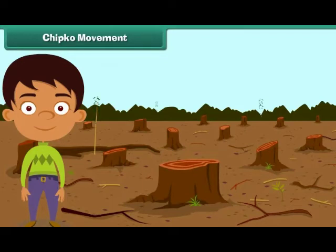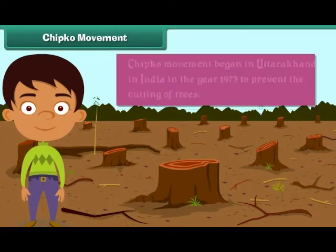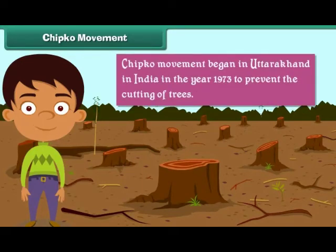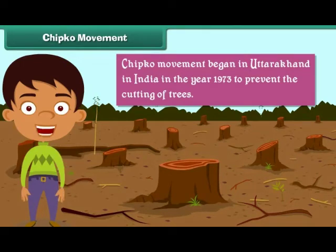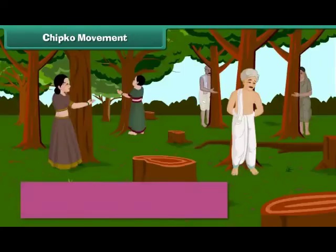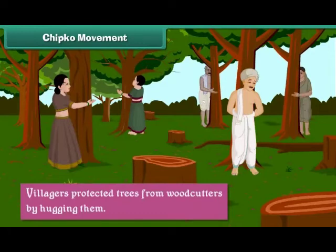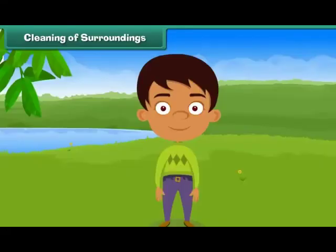Chipko Movement. Chipko Movement began in Uttarakhand in India in the year 1973 to prevent the cutting of trees. It was called the Chipko Movement because during the movement, villagers protected trees from woodcutters by hugging them.